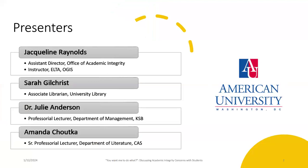Hi, I'm Amanda Chaska. I'm a Senior Professorial Lecturer in the Writing Studies Program in the Department of Literature in the College of Arts and Sciences. I also have a faculty fellowship with the Center for Community Engagement Service, now the Center for Leadership and Community Engagement, to work on the Working Washington Initiative that focuses on community-based learning and research across the university.